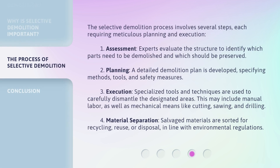The selective demolition process involves several steps, each requiring meticulous planning and execution. First, experts evaluate the structure to identify which parts need to be demolished and which should be preserved. Second, a detailed demolition plan is developed, specifying methods, tools, and safety measures. Third, specialized tools and techniques are used to carefully dismantle the designated areas — this may include manual labor as well as mechanical means like cutting, sawing, and drilling. Fourth, salvaged materials are sorted for recycling, reuse, or disposal, in line with environmental regulations.